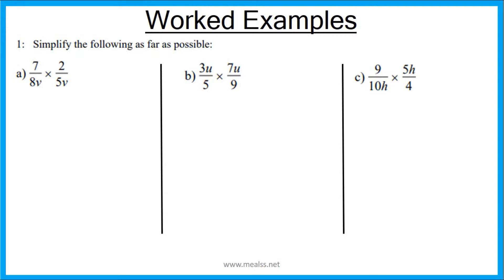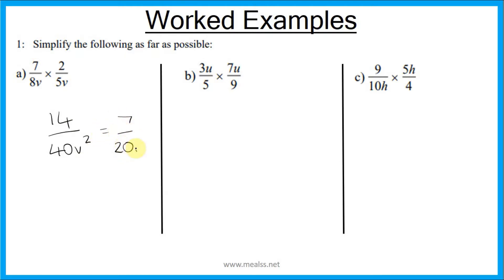The question says simplify the following as far as possible. In order to do that, we first need to work out the question. The same rule applies: 7 times 2 is 14, and 8v times 5v is 40v squared. This can be simplified further to 7 over 20v squared, and that would be our final answer.